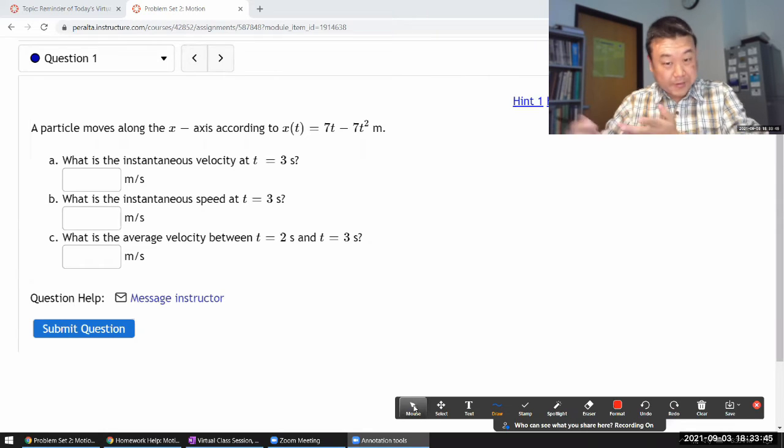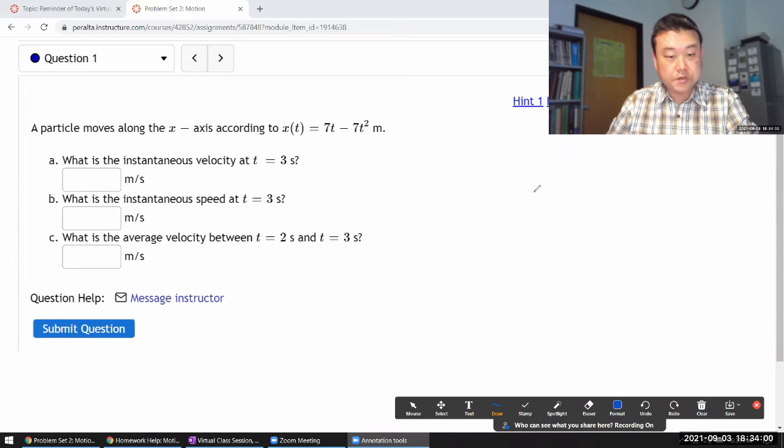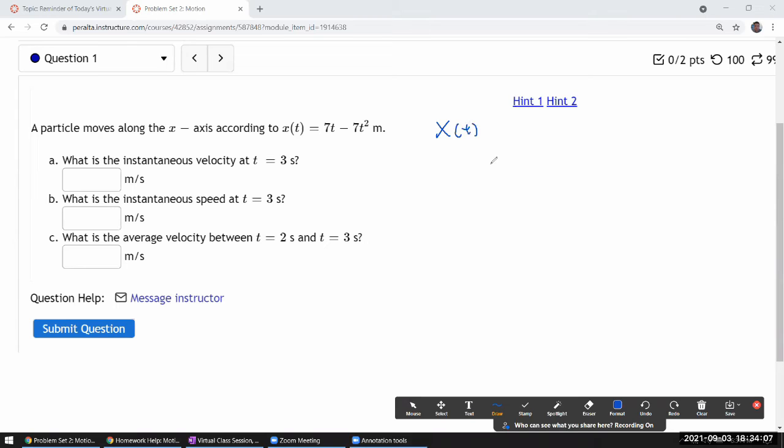So for example, these are the definitions of velocity and acceleration. If you have a position as a function of time, then velocity is defined as the time derivative of position. And acceleration is defined as time derivative of velocity.